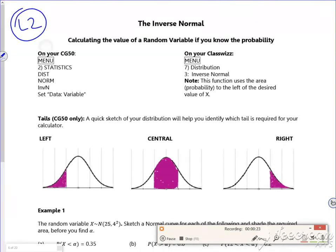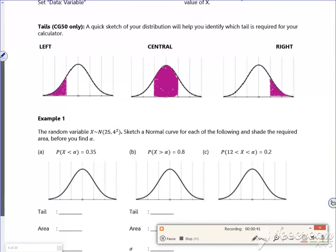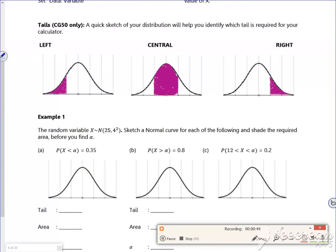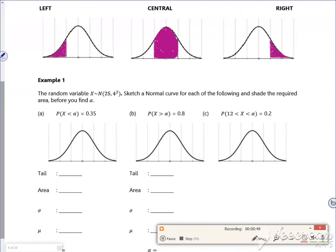On your CG50 calculator, you can choose the tails, which is nice. You can have it as a left tail, central, or right hand tail. Here's an example: we have a random variable where mu is 25 and sigma squared is 4 squared, so sigma is 4.